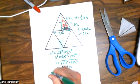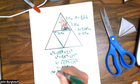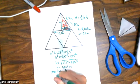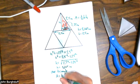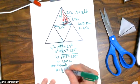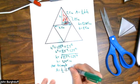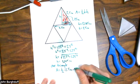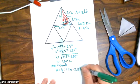So the area of one triangle would be one half times the base, 2.5 inches, times the height, 2.165 inches.